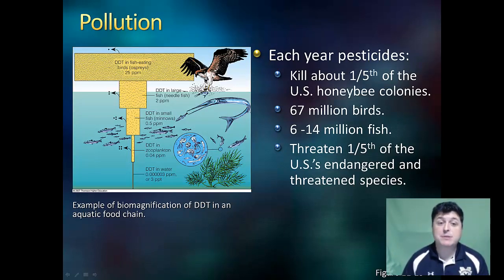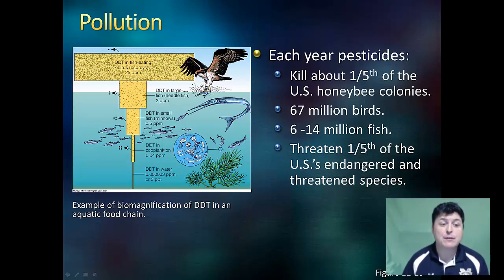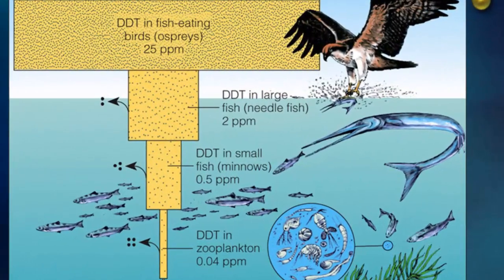Pollution also threatens some species with extinction, as shown by the unintended effects of certain pesticides. Each year, pesticides kill about one-fifth of U.S. honeybee colonies, 67 million birds, 6 to 14 million fish, and threaten one-fifth of U.S. endangered and threatened species. During the 1950s and 1960s, populations of fish-eating birds such as ospreys, brown pelicans, and bald eagles plummeted. A chemical derived from the pesticide DDT, when biologically magnified in food webs, made the birds' eggshells so fragile they could not reproduce successfully. Hard-hit were also predatory birds like the prairie falcon, sparrowhawk, and peregrine falcon. Since the U.S. ban on DDT in 1972, most of these species have made a comeback.